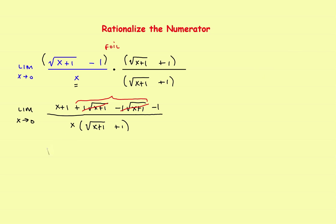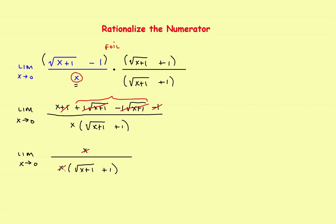After canceling the middle terms, in the numerator you have x plus 1 minus 1, and the plus 1 and minus 1 cancel out, leaving just x. In the denominator you have x times the square root of x plus 1 plus 1. Now the x in the numerator cancels the x in the denominator — that was the whole reason for doing the rationalizing, to eliminate that x in the denominator.